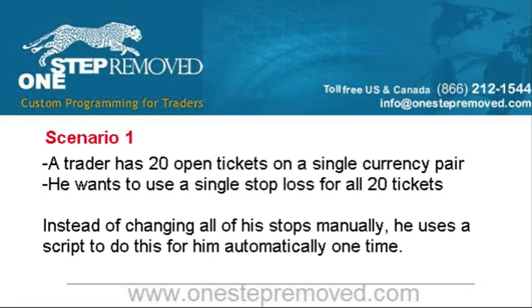One easy way to do that would be to write a script where the trader drags and drops that script onto the chart he's trading. The script will cycle through every single ticket that's open for his trades and adjust the stop. Say he's trading EURUSD and he wants to put a stop at 129 — the script gets dragged onto a EURUSD chart, looks for every ticket opened from EURUSD, and puts the stop at 129. As soon as it's done cycling through all the trades, it stops running and it'll never run again until the trader puts it on the chart again.